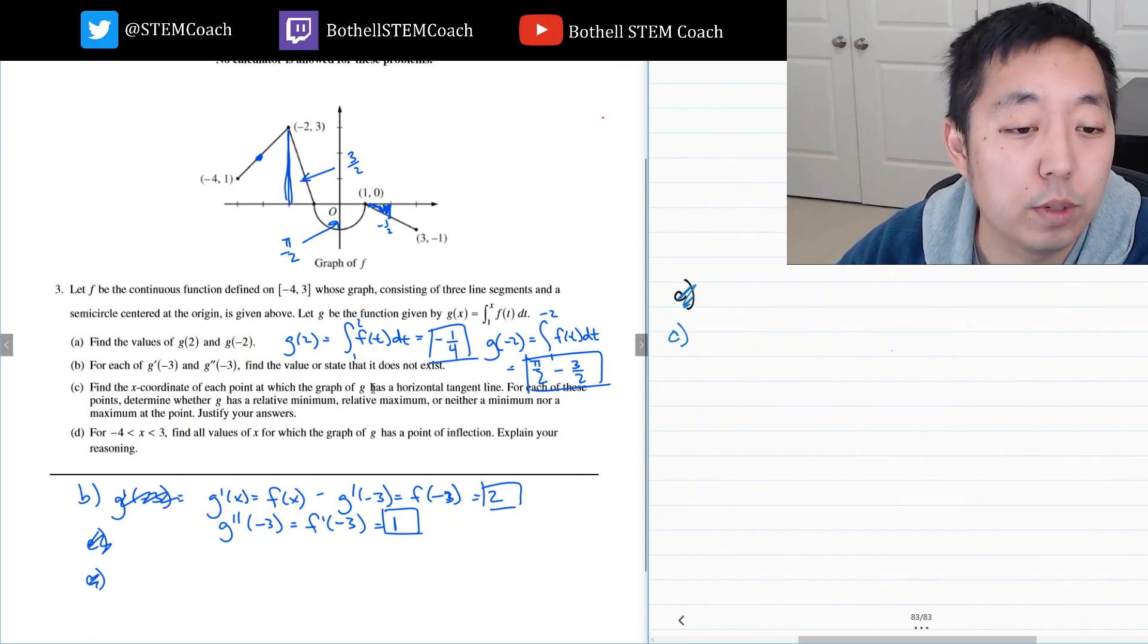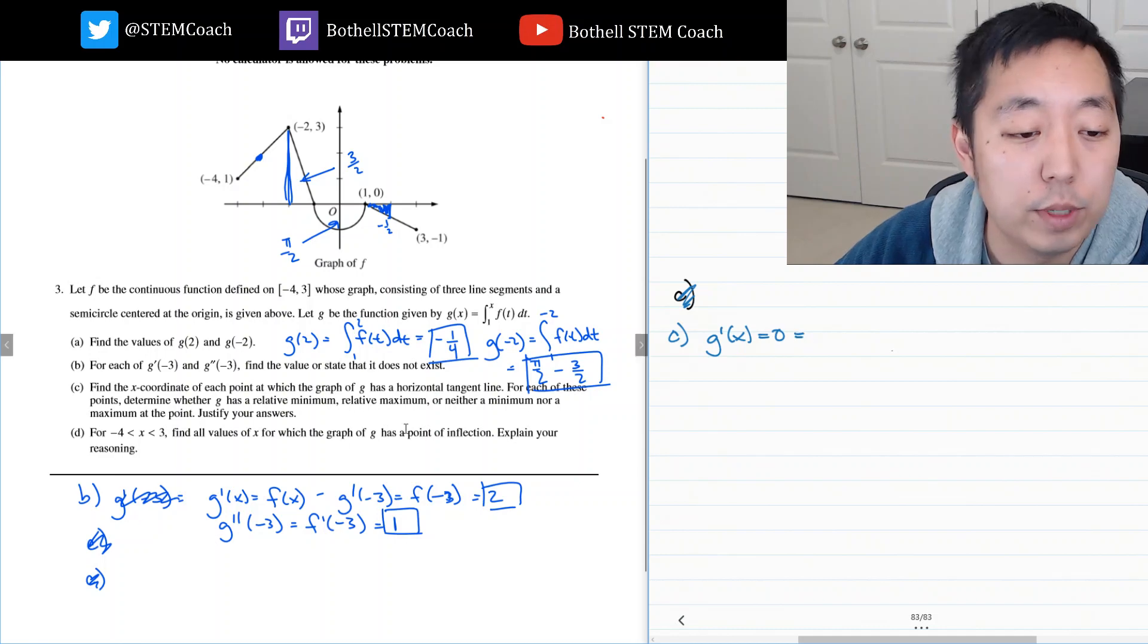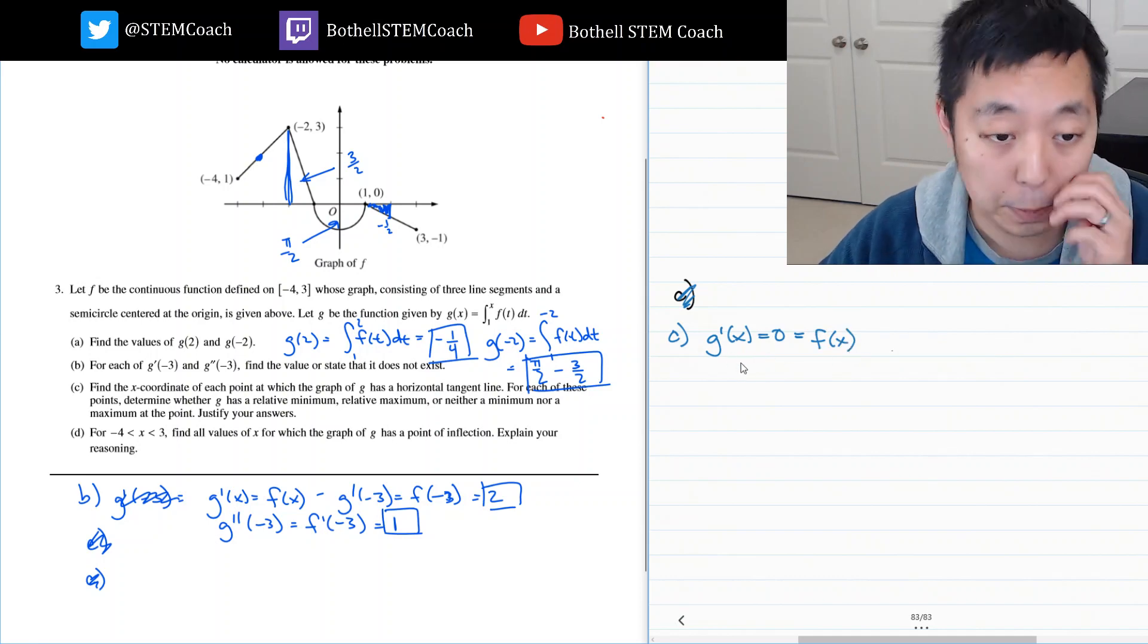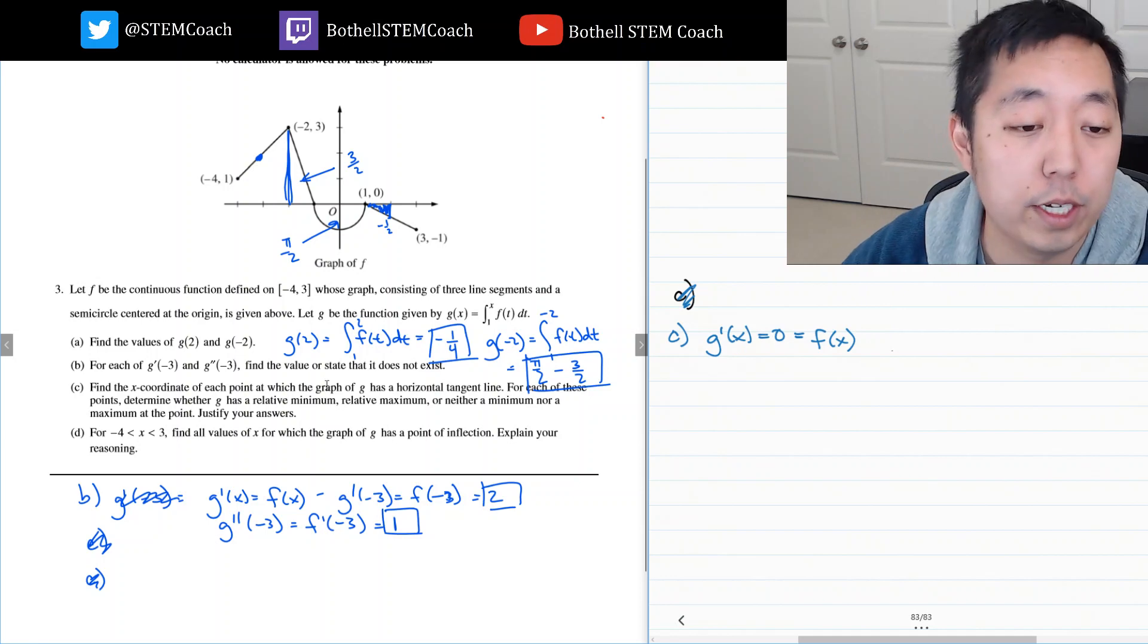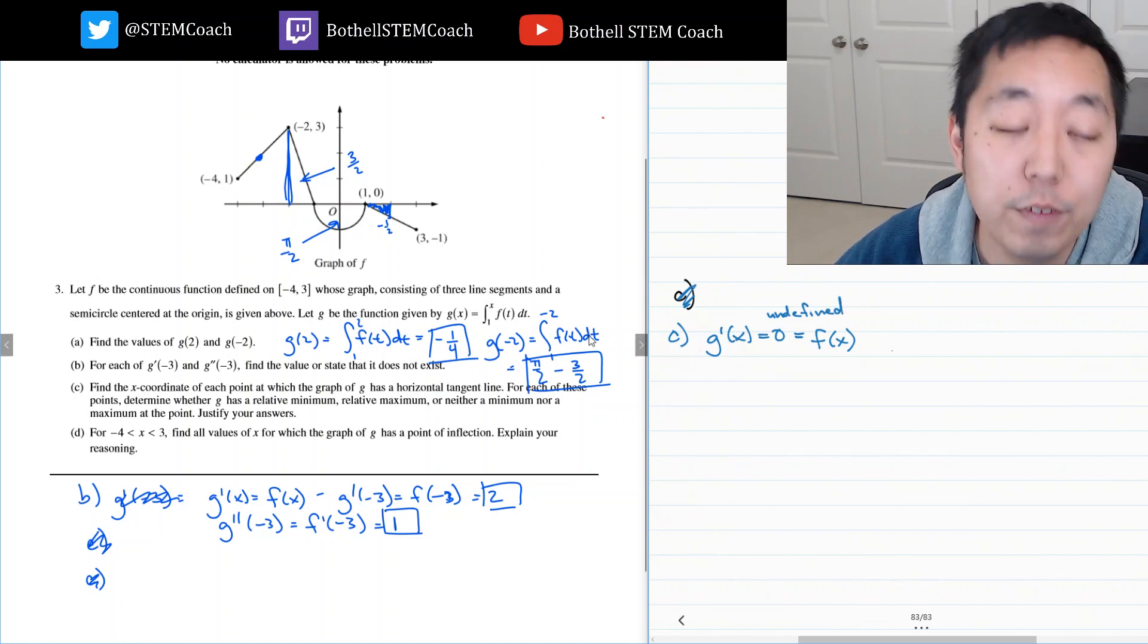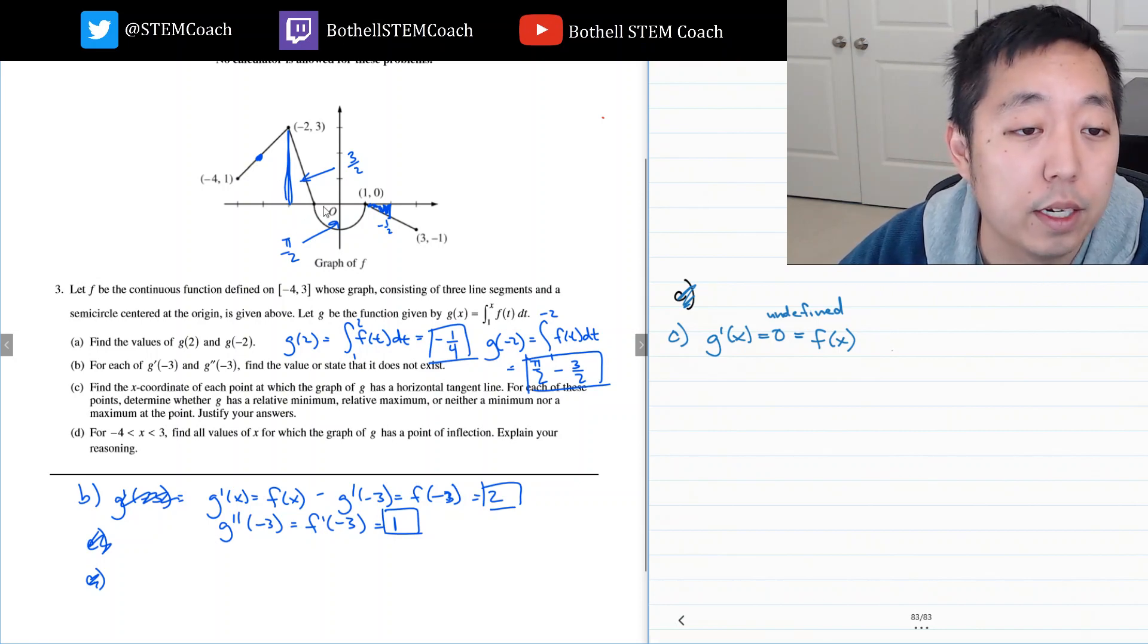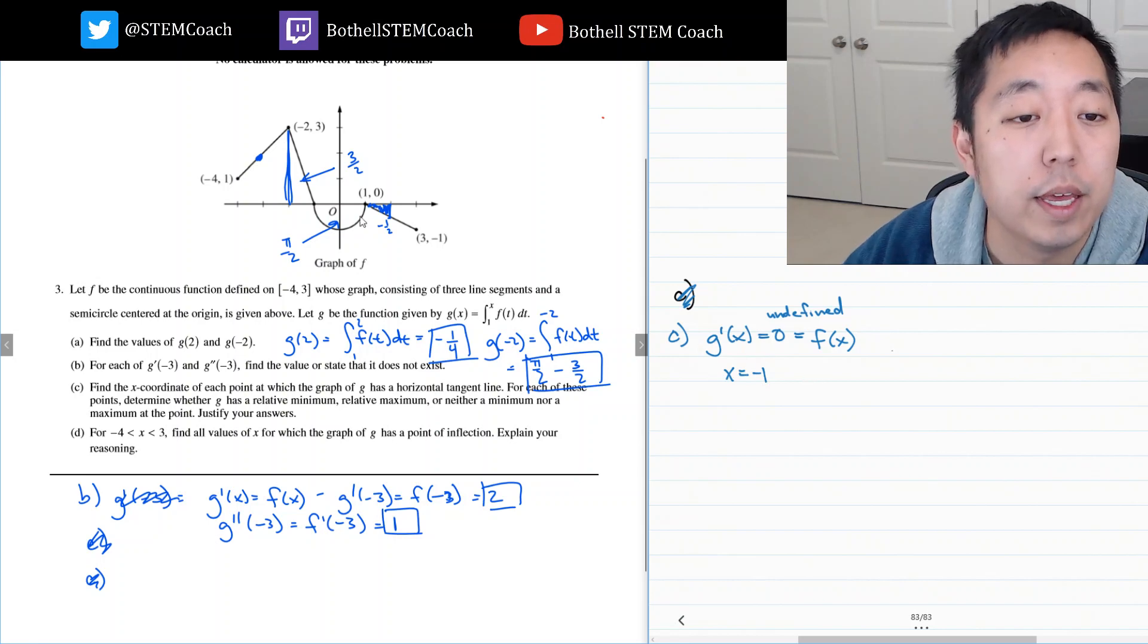Find the x coordinate at each point where the graph of G has a horizontal tangent line. Horizontal tangent line, which would mean G prime of x equals zero. And we just found that G prime of x is F of x. So, that's F of x equals zero. And then we got to determine whether it's a relative min, max or neither. So, when is F of x equal to zero or undefined? F of x is defined everywhere. So, F of x, when it's zero, is at negative one and then at one. And that's it.